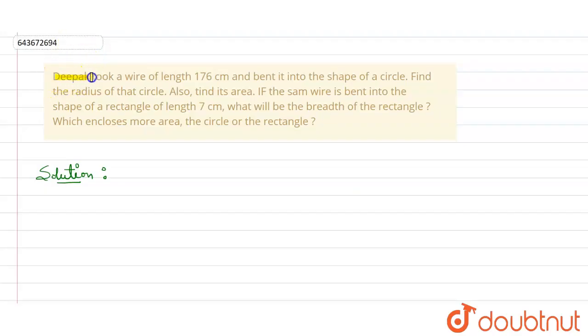It is given that Deepak took a wire of length 176 centimeter and he bent it into the shape of a circle. So we have to find the radius of that circle and also its area. Let's first solve this part, because it is a lengthy question.